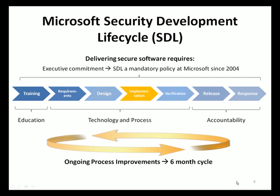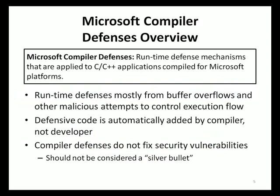This presentation focuses on key Microsoft compiler defenses and how they can be used to make applications more resilient to attack, specifically the implementation phase of the Microsoft SDL. Current Microsoft compilers can be used to add defensive measures to compiled code. Most Microsoft compiler defenses are relevant to applications developed in C and C++, and are primarily aimed at limiting risk from buffer overflows and other vulnerabilities that can allow a malicious user to control the execution flow of an application. All necessary defensive code is applied to the application by the compiler, not by the developer, requiring minimal effort from application development teams.